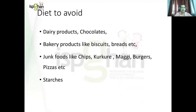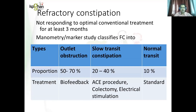Certain constipating foods need to be avoided, including dairy products, chocolates, bakery products, junk foods, and diets predominant in starch — these should be consumed as minimally as possible so we can help with lesser pharmacotherapy. When a child doesn't respond despite conventional treatment for 3 months, we label it as refractory constipation. These children need referral and further investigation. Based on manometry or marker studies, three different motility patterns are described: outlet tract obstruction, slow transit constipation, and normal transit constipation. Understanding the motility pattern is important because treatment differs — outlet tract obstruction is treated better with biofeedback, slow transit will need added therapy such as electrical stimulation or ACE procedure, and normal transit needs standard treatment to be continued.